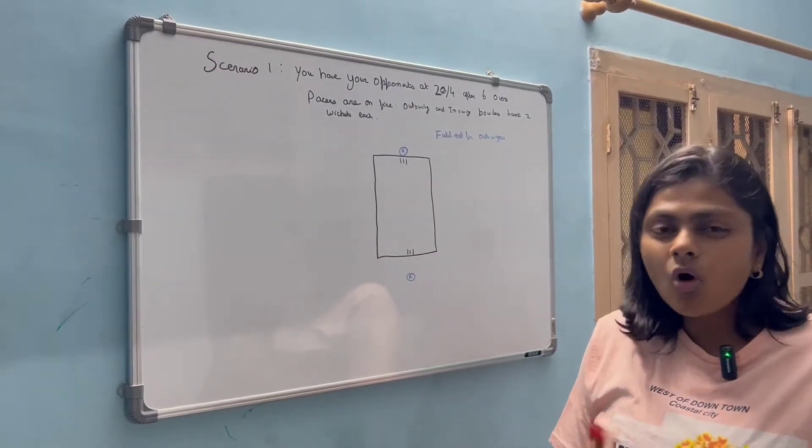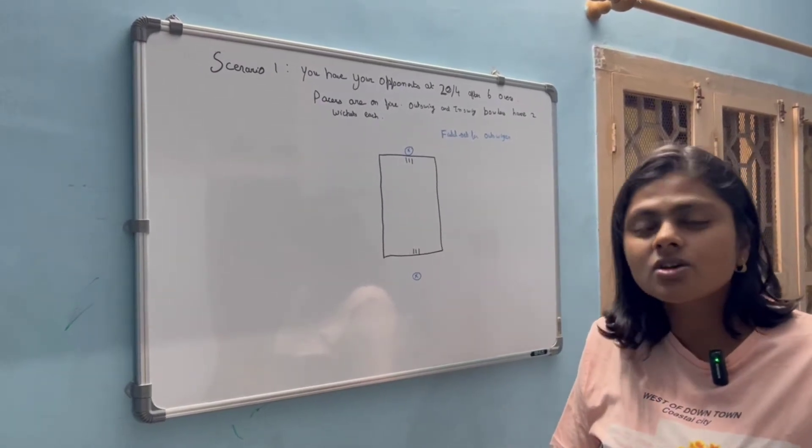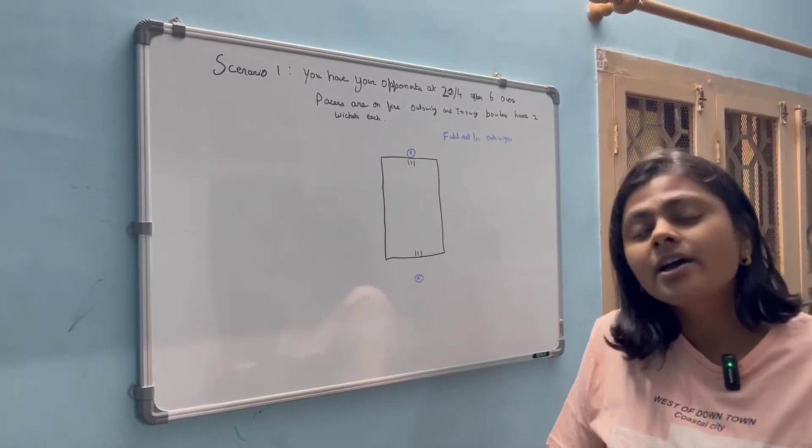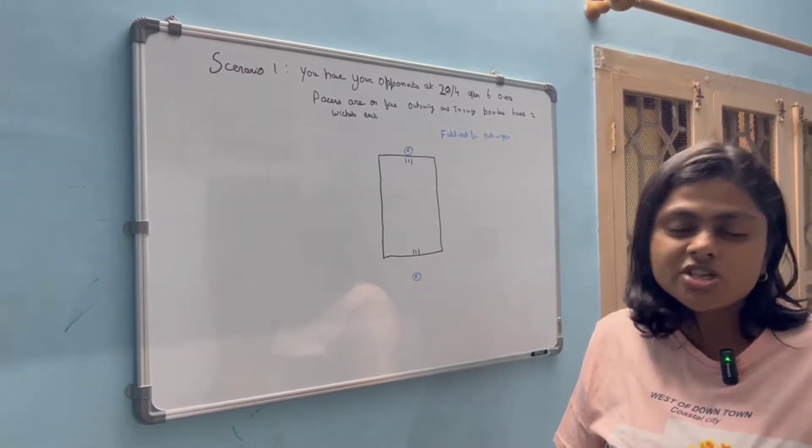So as a captain, what field can you set differently to these two bowlers so that they can be more effective and you can bundle out your opposition by using the conditions for a very cheap score.